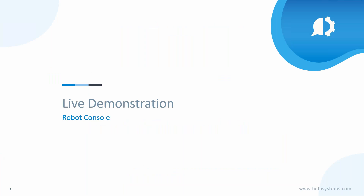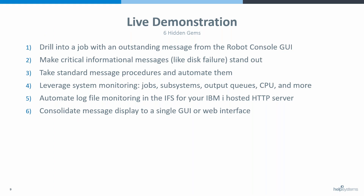That's the high level. Let's get rolling with some live demonstration. Chuck, you're going to look at a job and drill down into the job log, and show how to automate that immediately from the GUI. We're also going to look at making critical informational messages like CPF0907 or that disk failure stand out when they arrive.